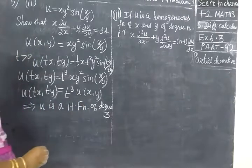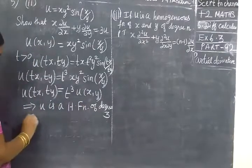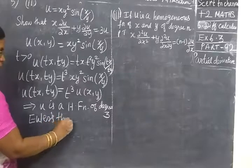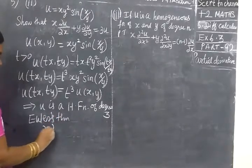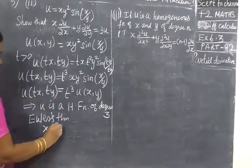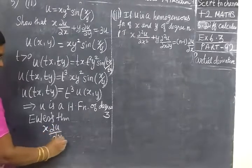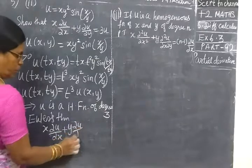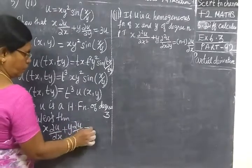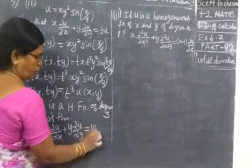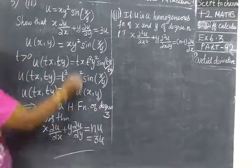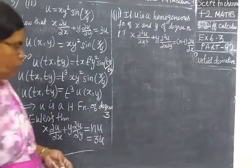It is a homogeneous function, so we can apply Euler's theorem. Euler's theorem: x into dou u by dou x plus y into dou u by dou y equal to nu. n is equal to 3, so 3u. This only we want to prove.